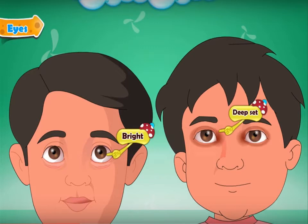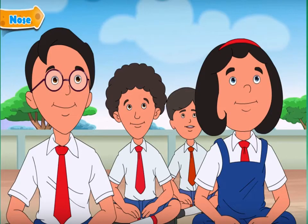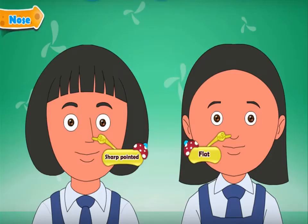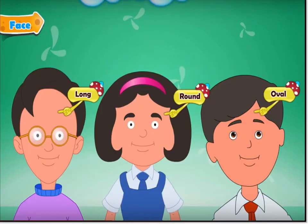Everyone has a different kind of nose. Someone might have a sharp, pointed nose, or someone might have a flat nose. Some of us have long faces, some of us have round faces, and some of us might even have oval faces. We all have different kinds of faces.